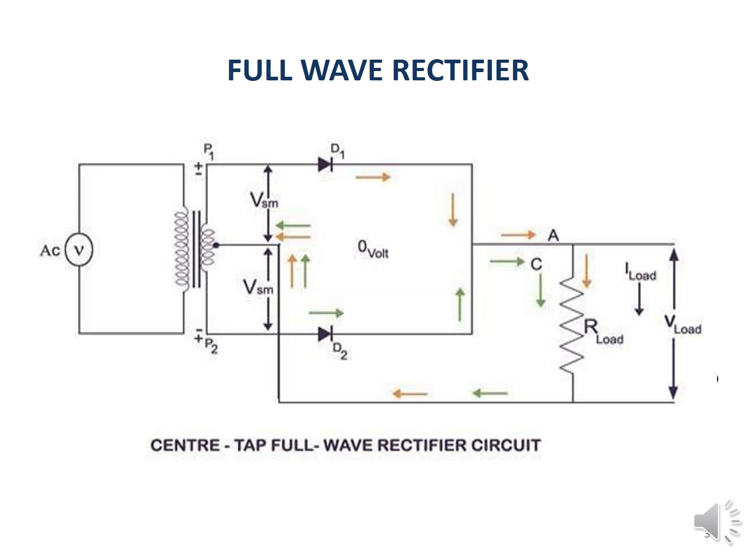During the positive half cycle, diode D1 is forward biased and conducts, and the AC voltage is converted to DC. During the negative half cycle, diode D2 is forward biased, and during this time also, a positive voltage is obtained across the load.